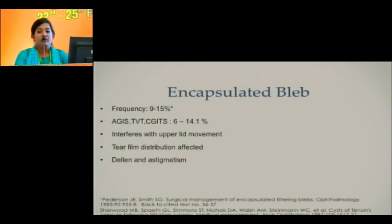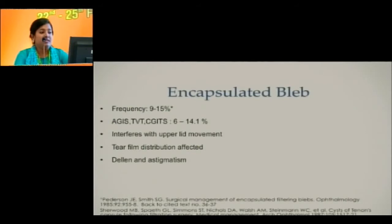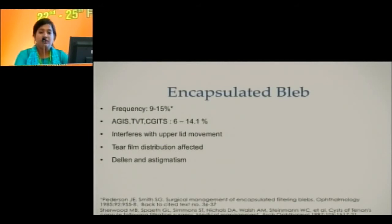The frequency of encapsulated bleb through various studies is around 9 to 15% post-operatively. In the AGIS, TVT, and CIGTS studies, it was seen to be 6 to 14.1%. These kinds of blebs interfere with upper lid movement, tear film distribution, and lead to dellen formation and astigmatism.